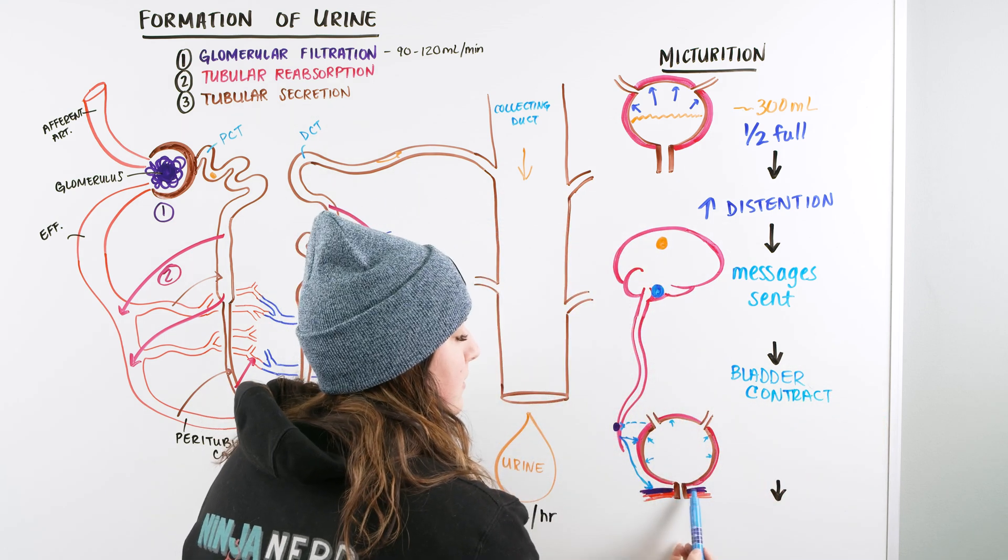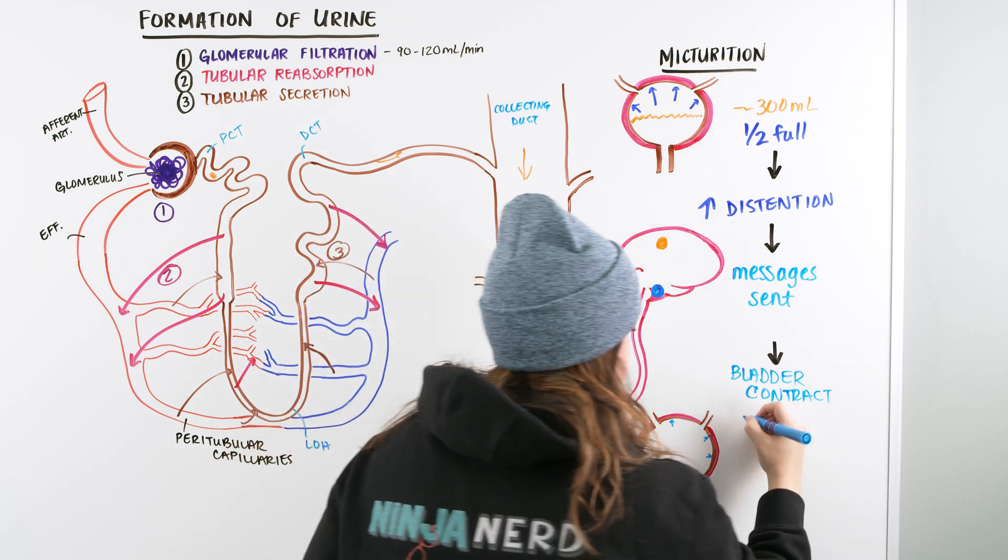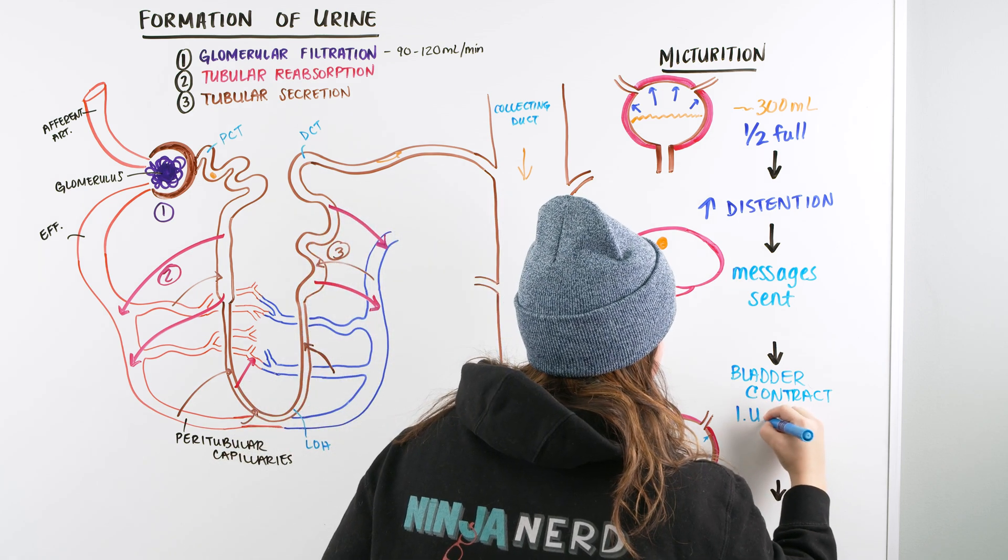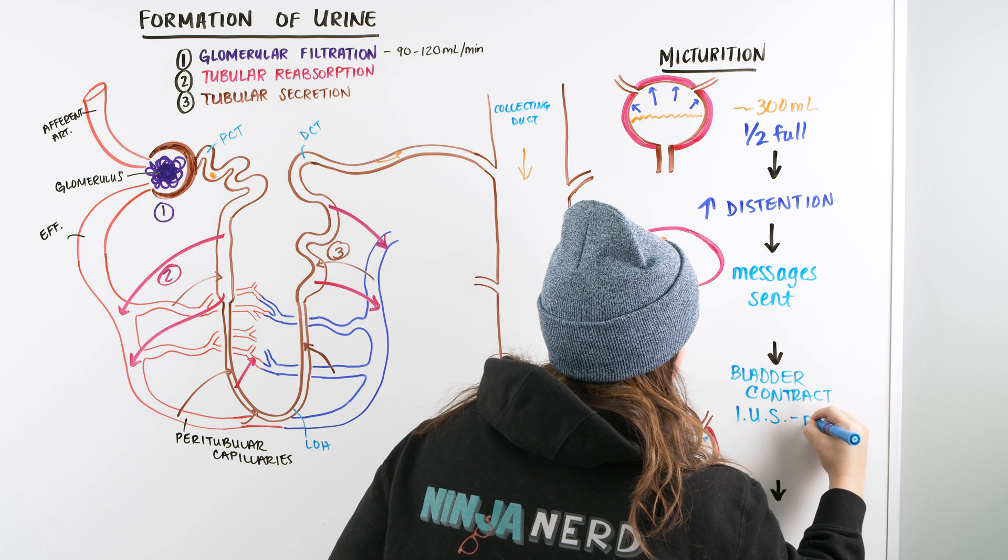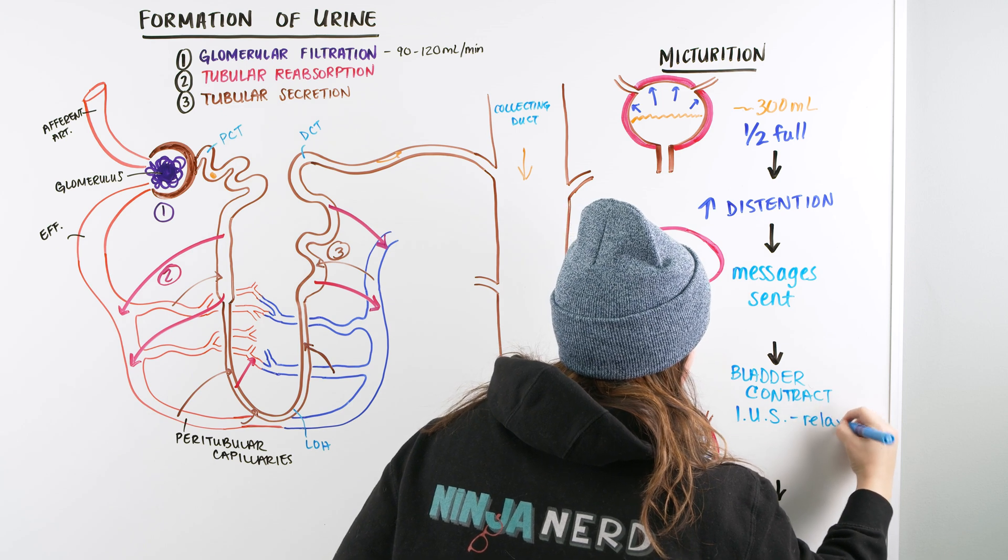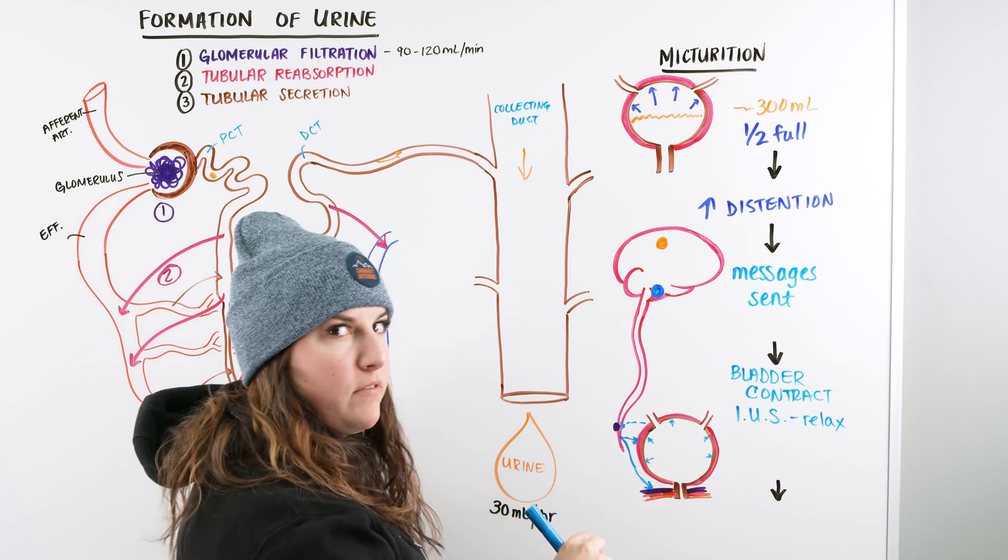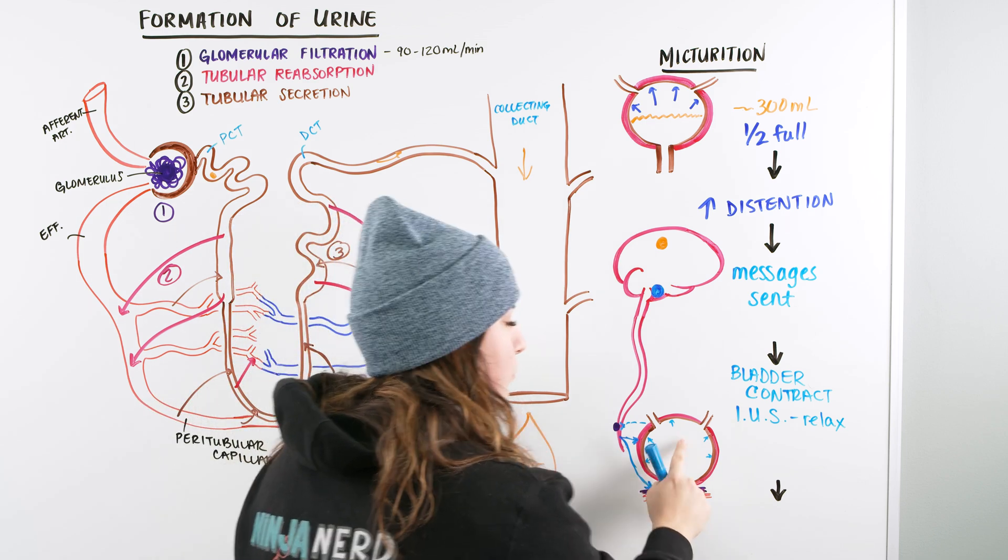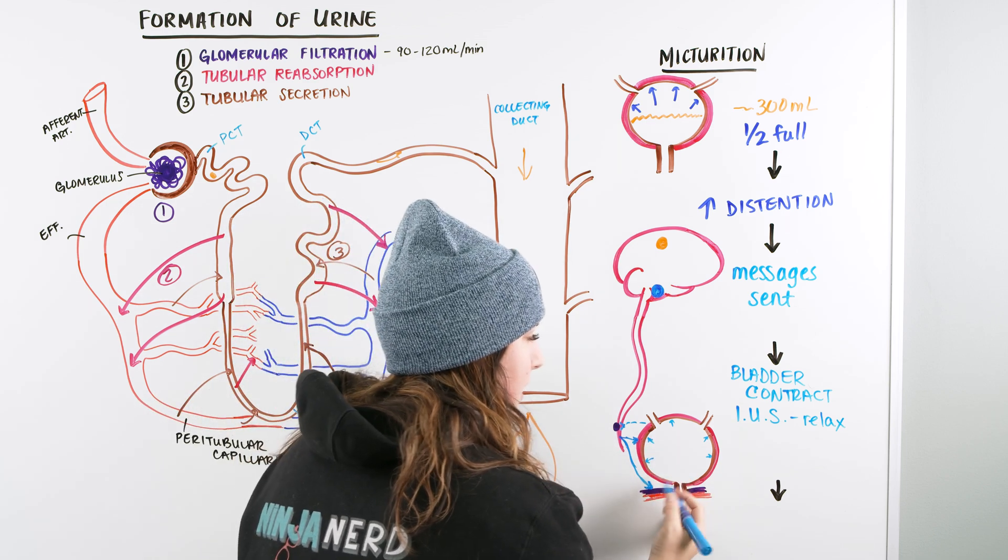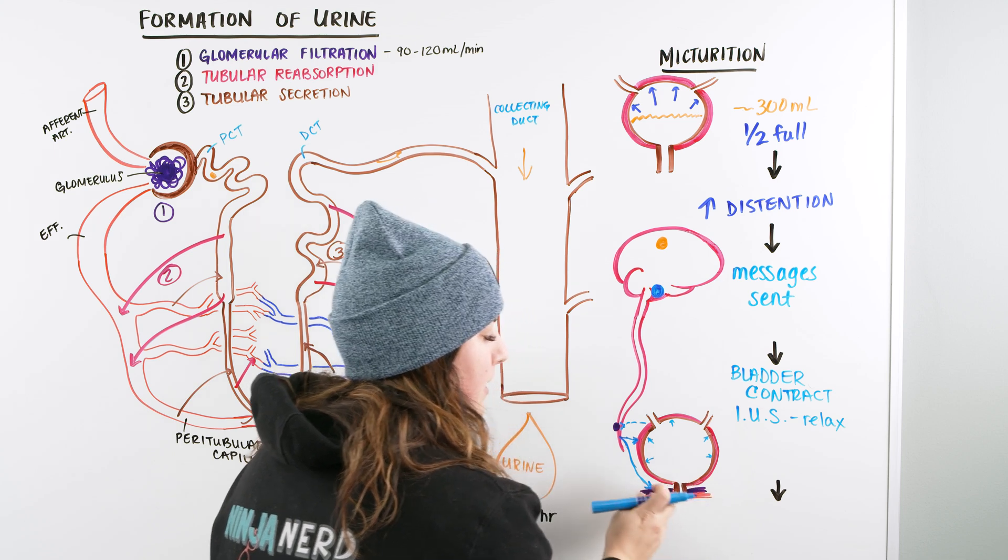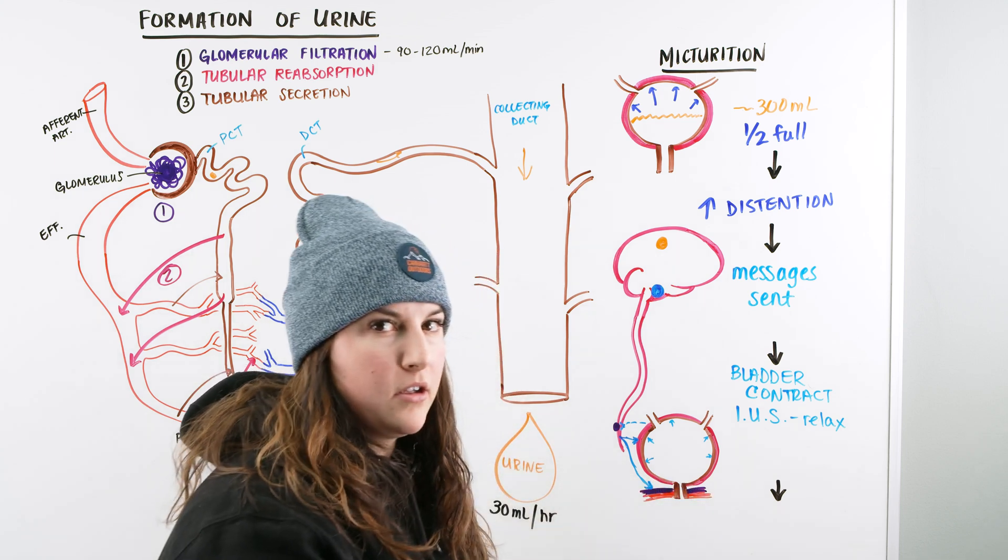So it's telling us, hey, your bladder's getting full. You need to get rid of all this urine. But we don't pee. We don't pee because our internal urethral sphincter is an involuntary control. But our external, the one that's a little lower, is able to be under voluntary control.